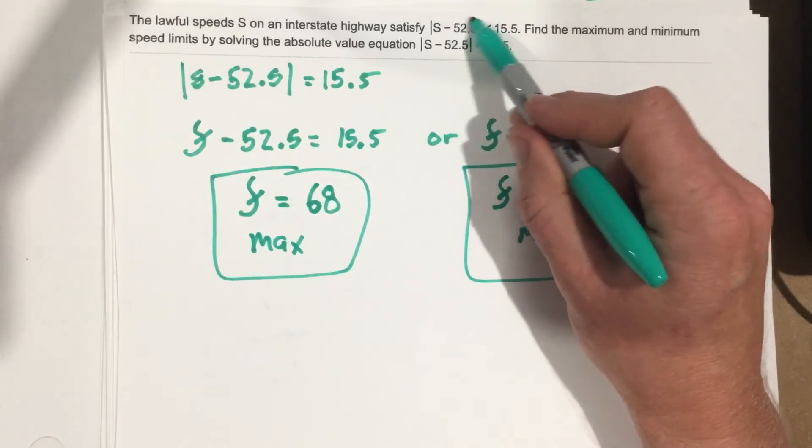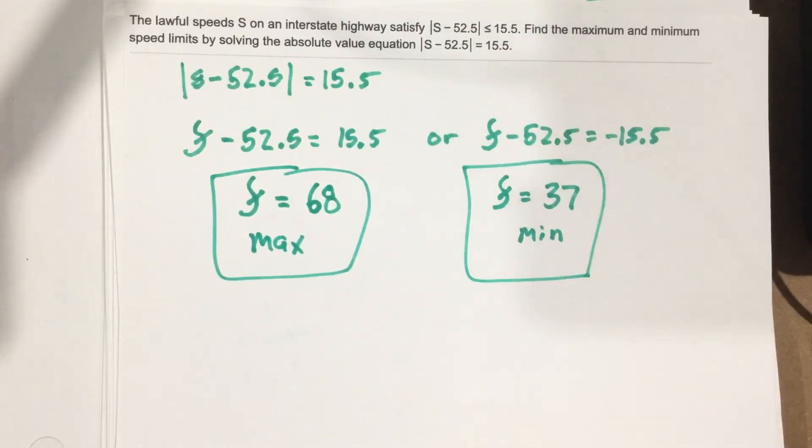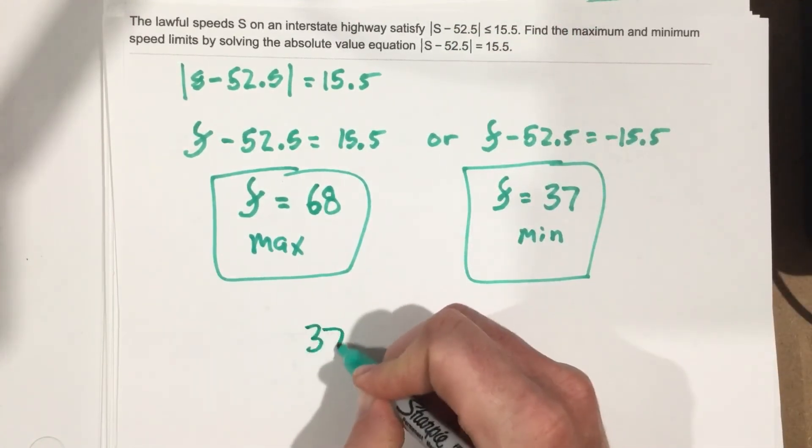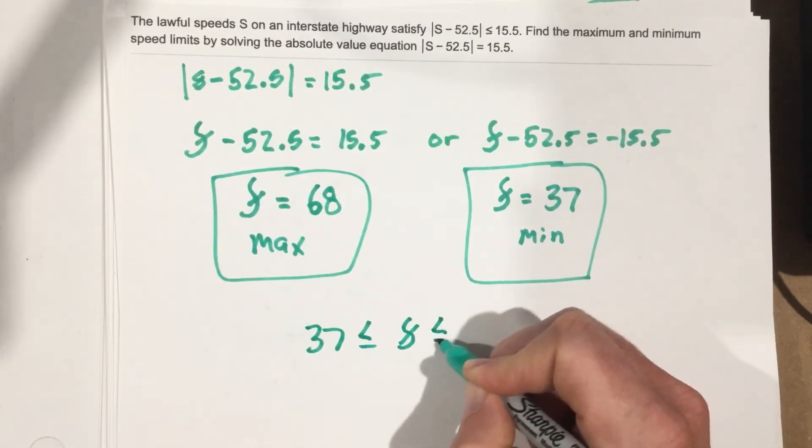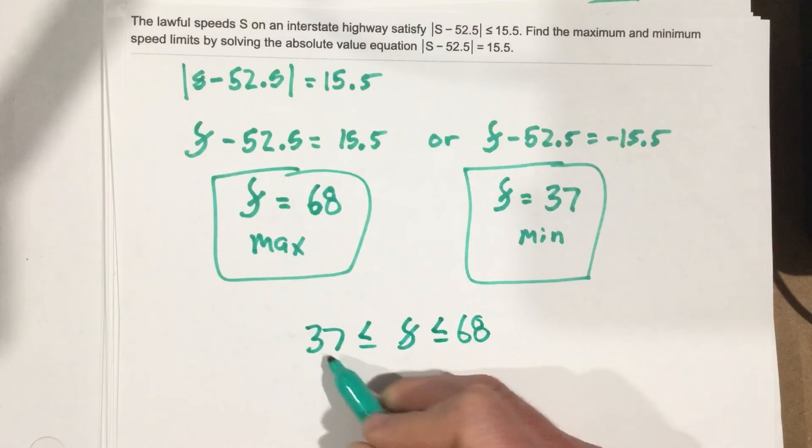if you solve this inequality as is, you would have ended up with 37 less than or equal to s less than or equal to 68, meaning your speed would have to stay between 37 and 68.